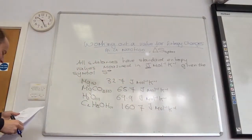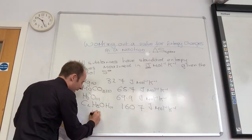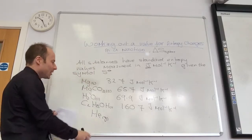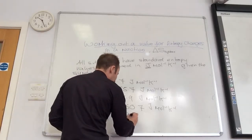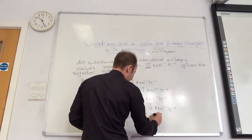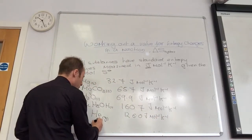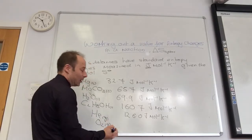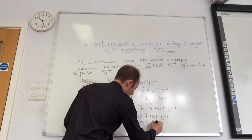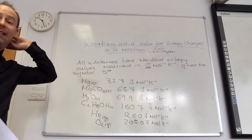Let's do a couple of gases. Helium gas — remember it's a gas but it's only one atom, so it's not going to be super high: 126.0 joules per mole per kelvin. And O2 as a gas is 205.0 joules per mole per kelvin. You'll always be given these values.